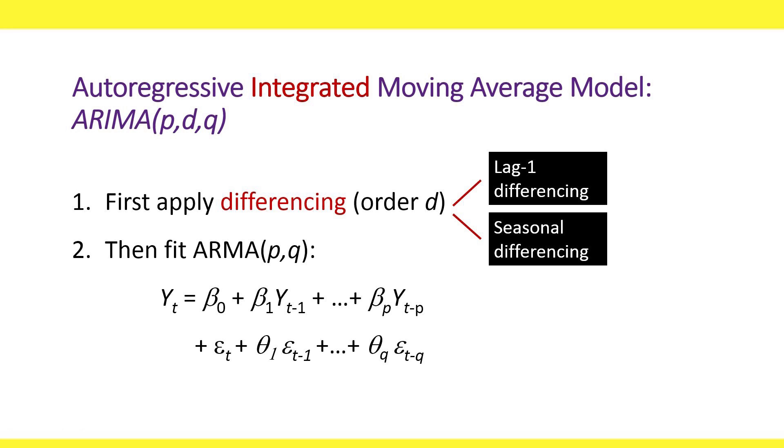In ARIMA modeling, we first apply differencing, typically lag one for removing trend or seasonal differencing, and then we fit an ARMA model to the difference series.